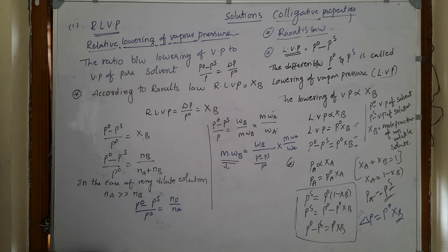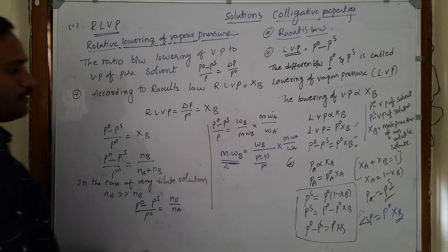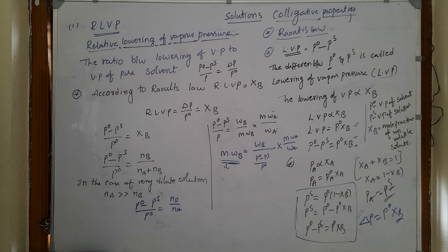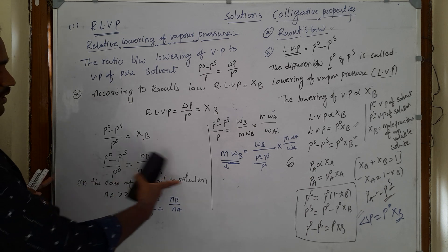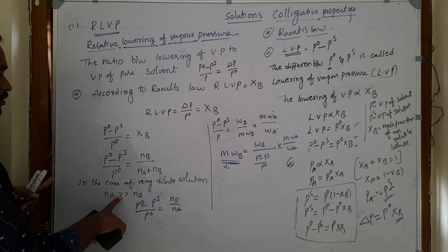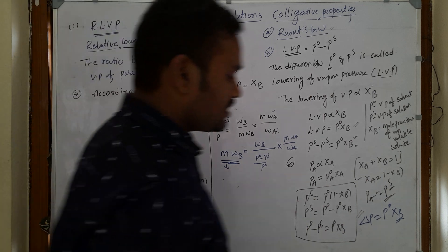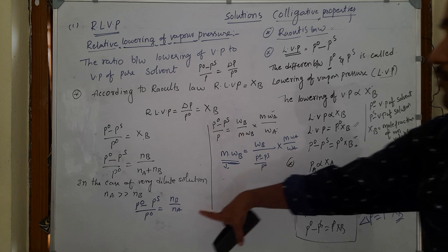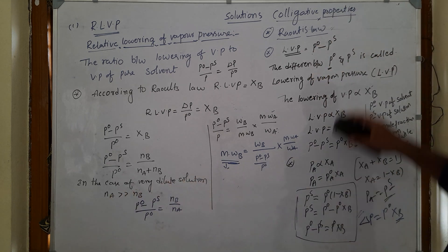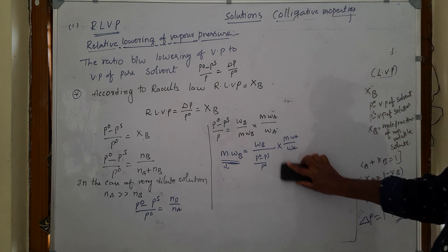If we know weight of B (WB), molecular weight of A (MWA), weight of A (WA), and the relative lowering of vapor pressure, we can find the molecular weight of B (MWB). MWB = WB × (MWA / WA) × (P0 / (P0 - Ps)). This is how we find the molecular weight of an unknown non-volatile solute.